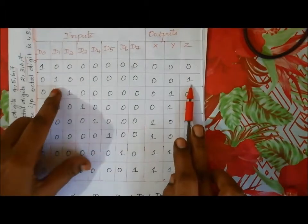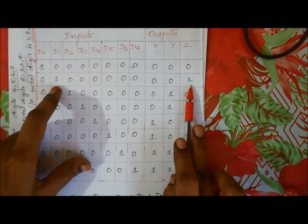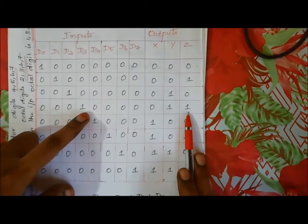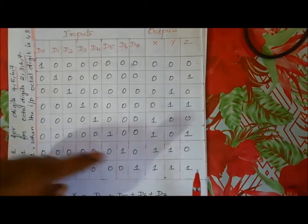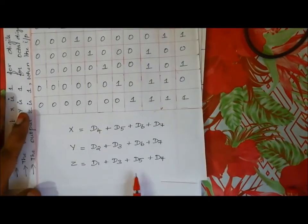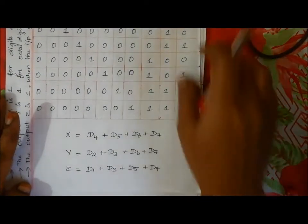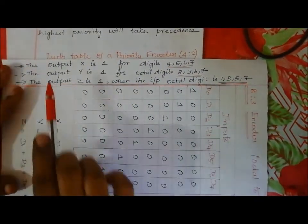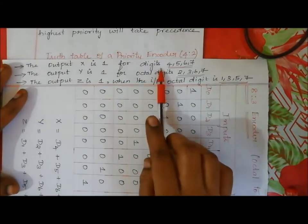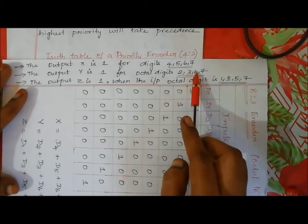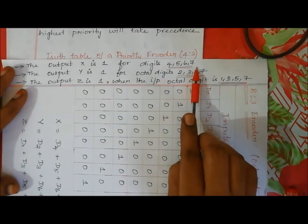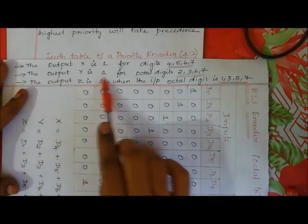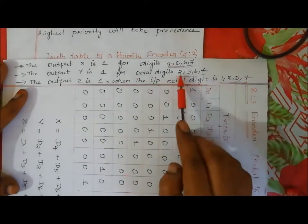Y is equal to D2 + D3 + D6 + D7. For output Z: it is 1 for octal digits 1, 3, 5, and 7, so Z = D1 + D3 + D5 + D7. The output X is 1 for digits D4, D5, D6, and D7. The output Y is 1 for octal digits D2, D3, D6, and D7.